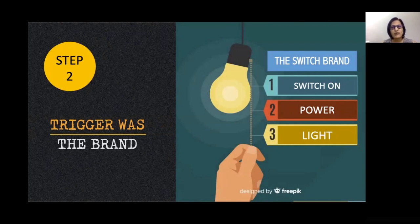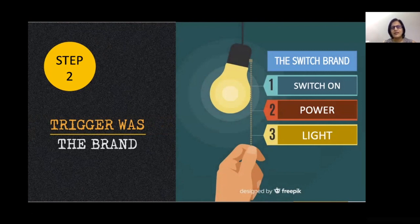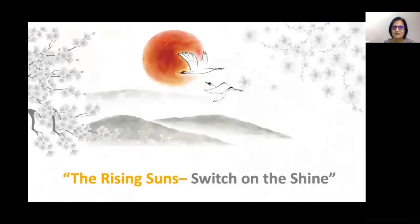We also saw how we arrived at the main theme using word mapping. We got the words 'switch on,' 'power,' and 'light.' The central theme was called 'The Rising Suns — Switch on the Shine,' because it was all about light, power, and ultimately switching on the inner shine of the employees.